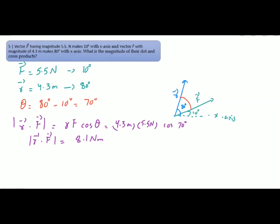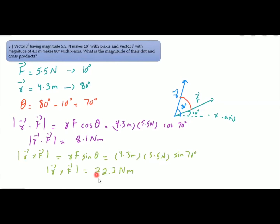For the cross product: |R × F| = RF sin θ = 4.3 × 5.5 × sin 70° = 22.2 N·m. Note that the magnitude of the cross product is the same whether you compute R × F or F × R; only the direction changes. So the dot product magnitude is 8.1 N·m and the cross product magnitude is 22.2 N·m.